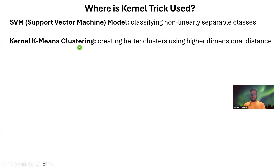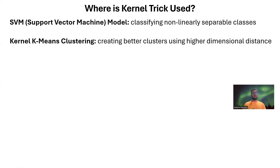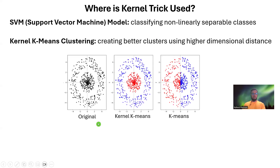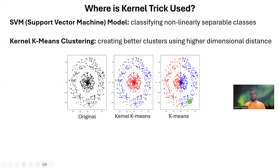Next, we can also use kernel trick for clustering, an example of unsupervised learning — we can form unsupervised clusters. If we apply k-means clustering, the distance will be calculated in the actual feature space. But if you use kernel trick, those distances will be calculated in a higher dimension, which looks very different from the actual lower dimension. As you can see, with normal k-means the separation is not good, but with kernel k-means these beautiful-looking clusters are formed.